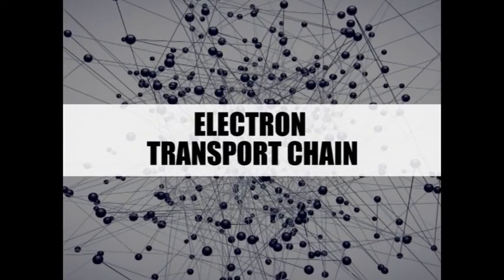Let's see the electron transport chain. Four large multiprotein complexes, denoted by Roman numerals 1 to 4, compose an electron transport chain in the inner mitochondrial membrane that is responsible for the generation of the proton motive force. Each complex contains several prosthetic groups that participate in the process of moving the electrons from donor molecules to acceptor molecules in coupled oxidation-reduction reactions.